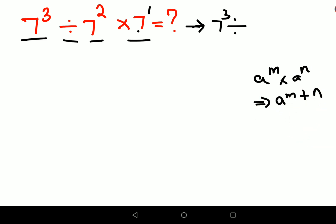So here you get 7 raised to 2 plus 1, which gives you 7 cube. So people thought the final answer is 1, but that is wrong.